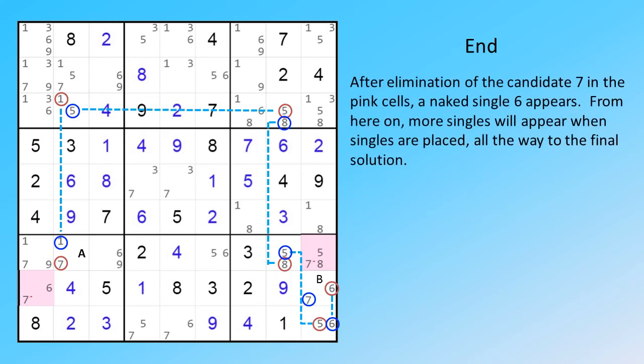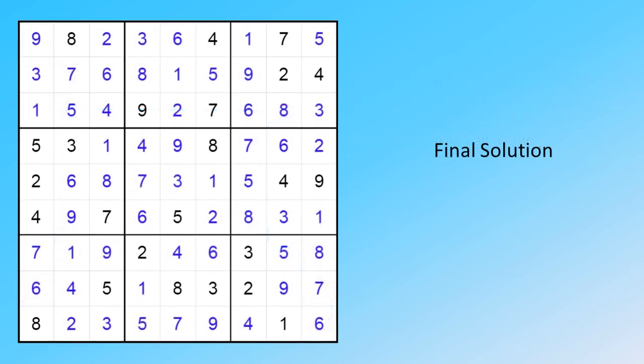After elimination of the candidate 7 in the pink cells, a naked single 6 appears. From here on, more singles will appear when singles are placed, all the way to the final solution. This is the final solution. Thanks for watching.